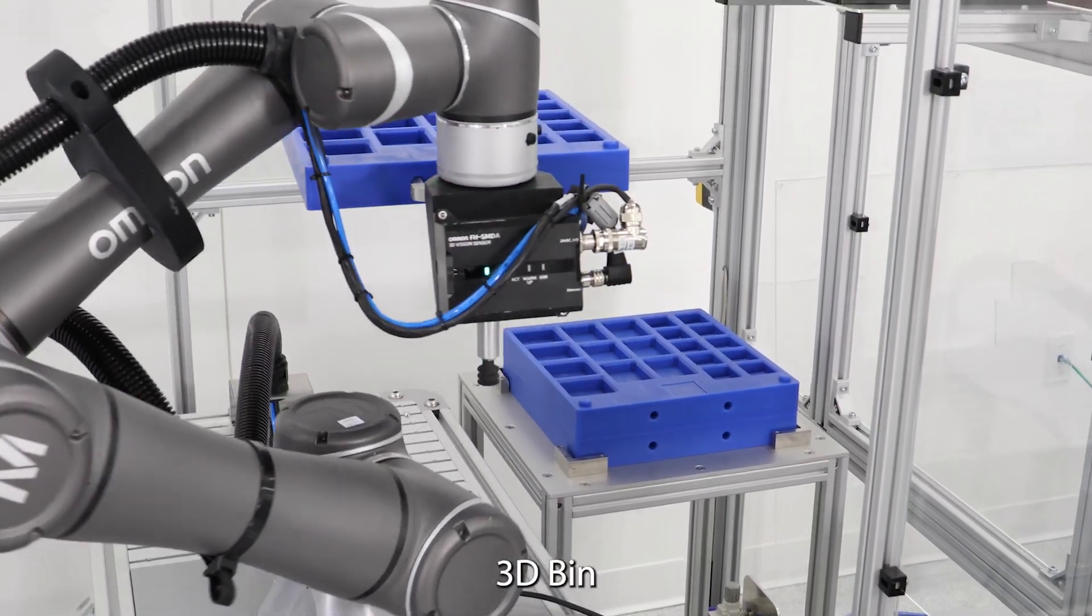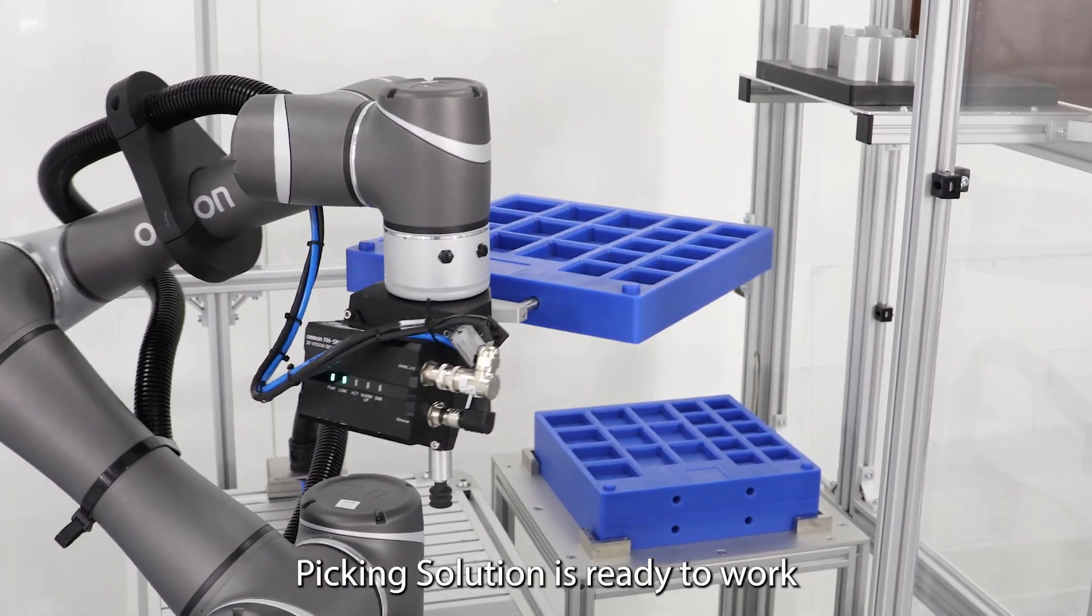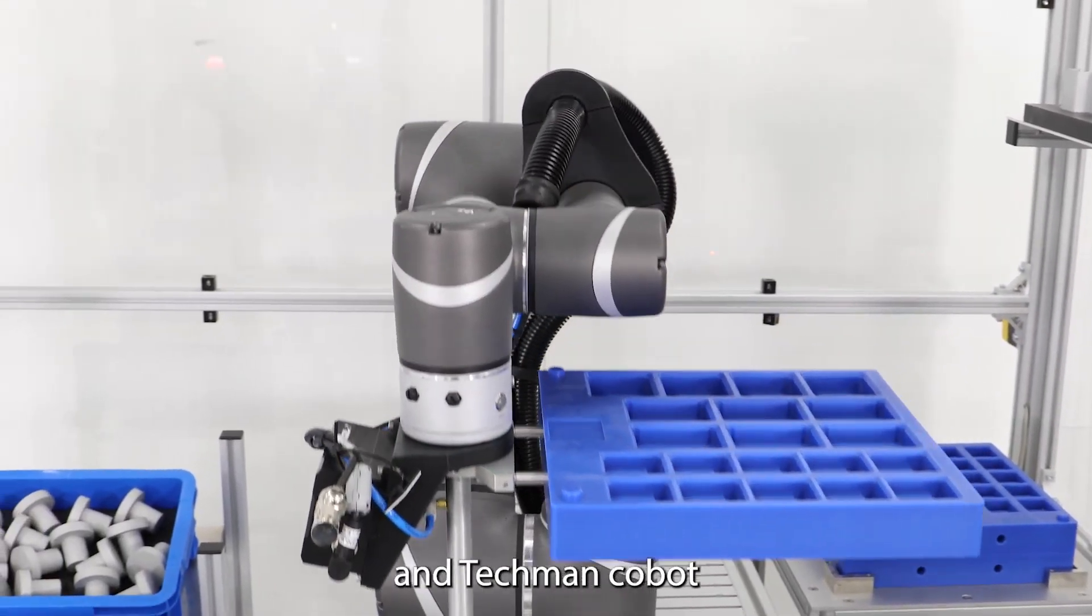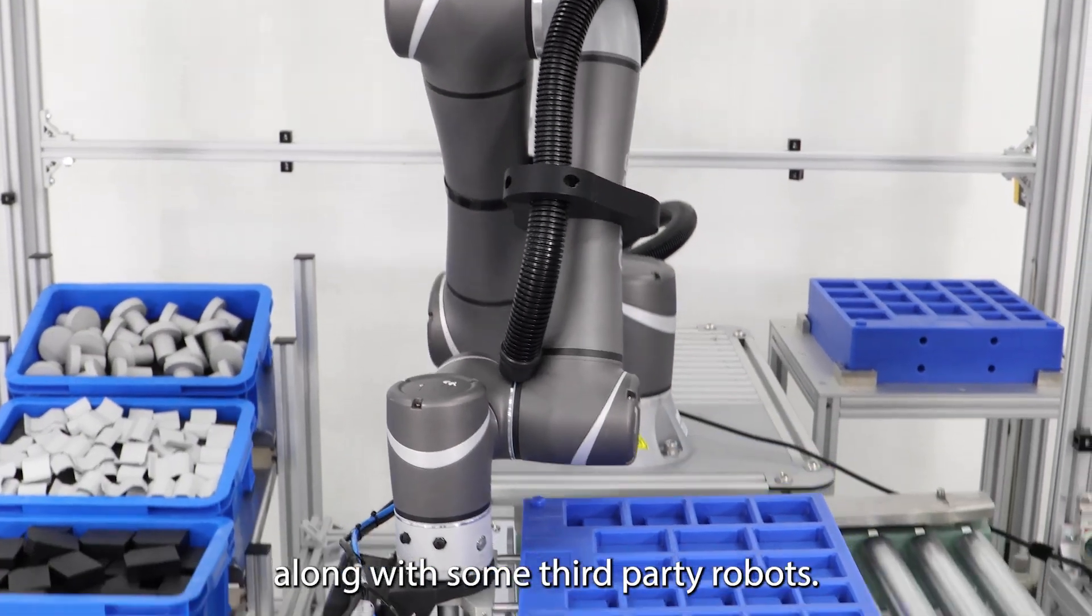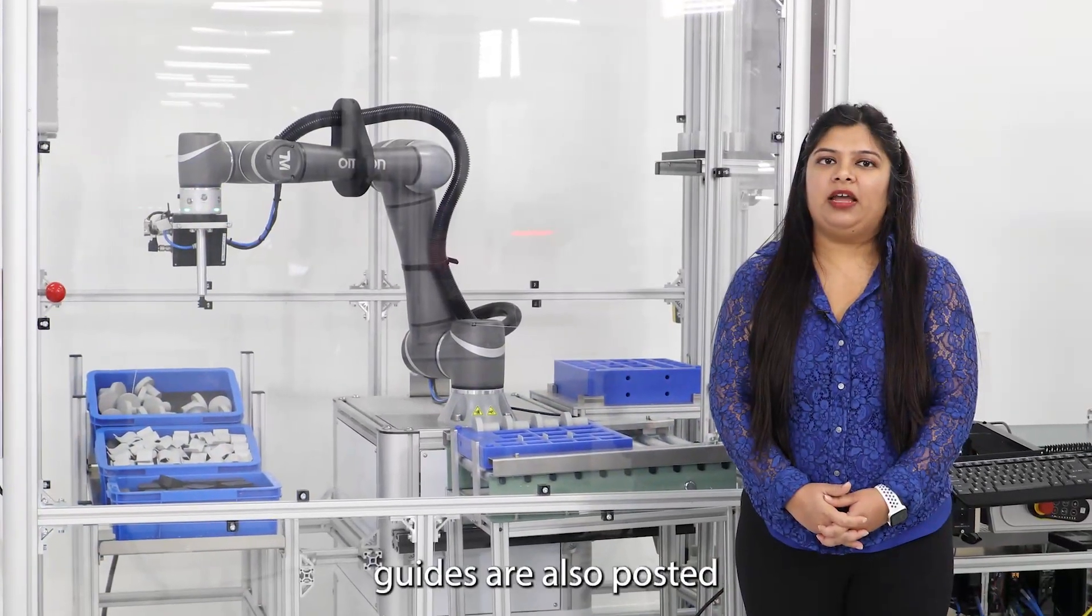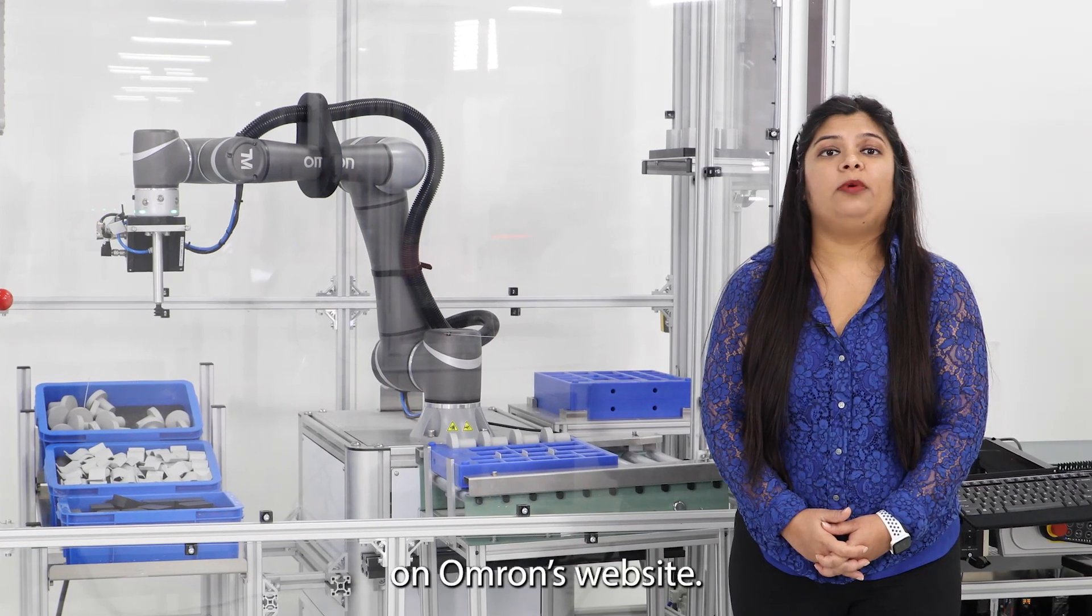Omron's AFH 3D bin picking solution is ready to work with Omron's Viper robot and Techman Cobot along with some third-party robots. Quick start guides are also posted on Omron's website.